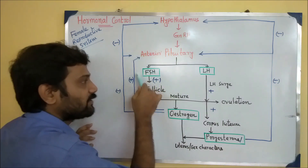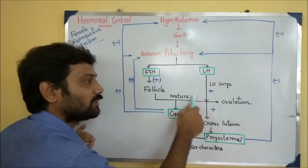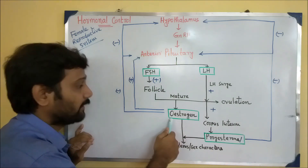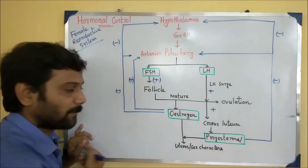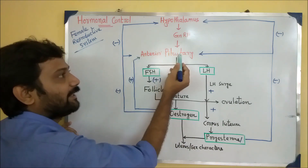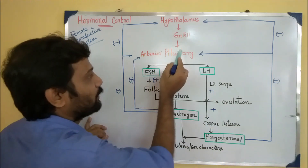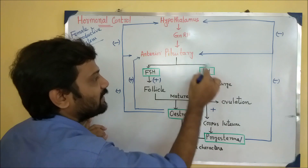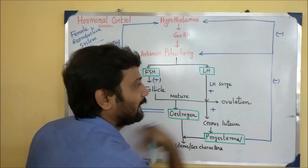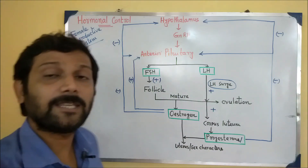The estrogen hormone is secreted and then a negative and positive feedback signal is generated. How does this affect the anterior pituitary? The anterior pituitary responds, and the second key event is the LH surge — a huge rise in LH.